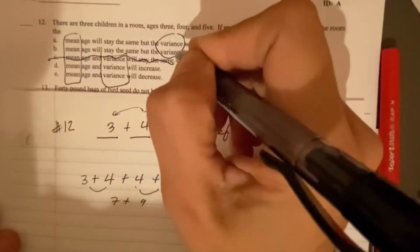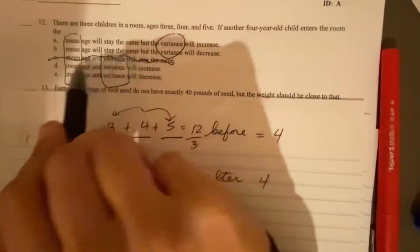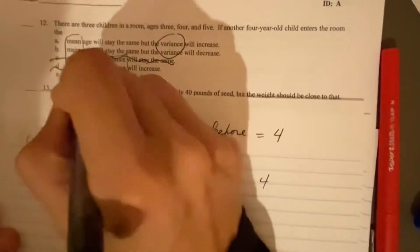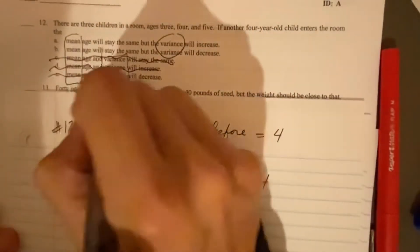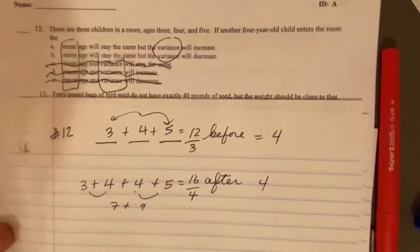The mean age will stay the same. I want to eliminate D and E.